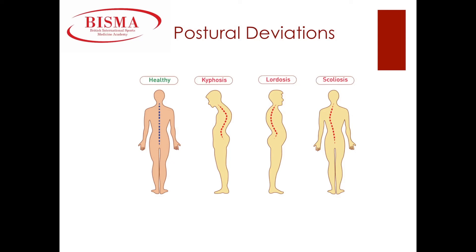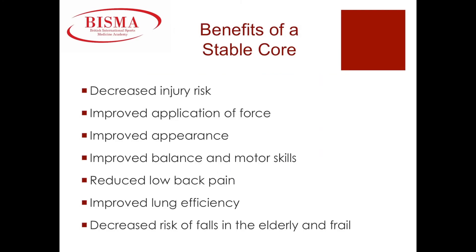Postural deviations such as hyperkyphosis, hyperlordosis, and scoliosis also affect core stability and proper posture. One aim as a personal trainer is to correct muscular imbalances within the body that can lead to postural deviations, and this will help your client achieve a neutral spine. When you have a stable core, it prevents unwanted movement, giving a decreased risk of injury, improved application of force upon impact, improved appearance with an upright posture, improved balance and motor skills, reduced lower back pain, improved lung efficiency, and within the elderly population, a decreased risk of falling.